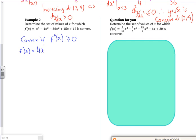So 4x cubed minus 12x squared minus 36x plus 15, and then differentiate it again, 12x squared minus 24x minus 36.